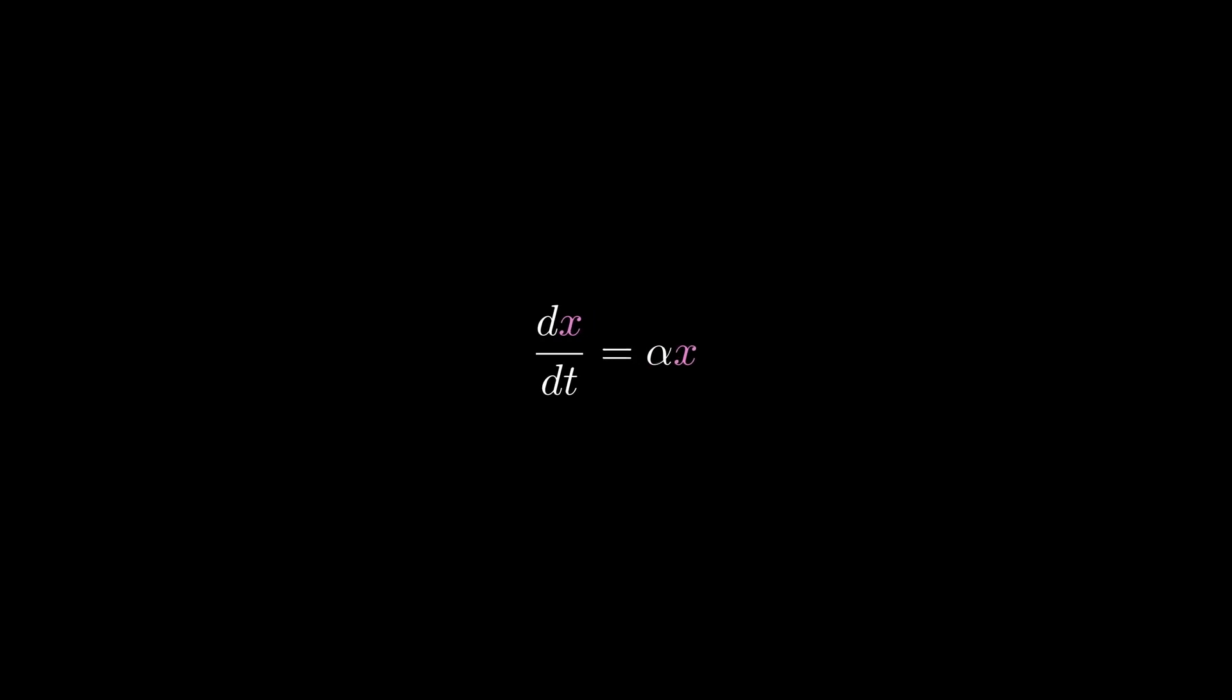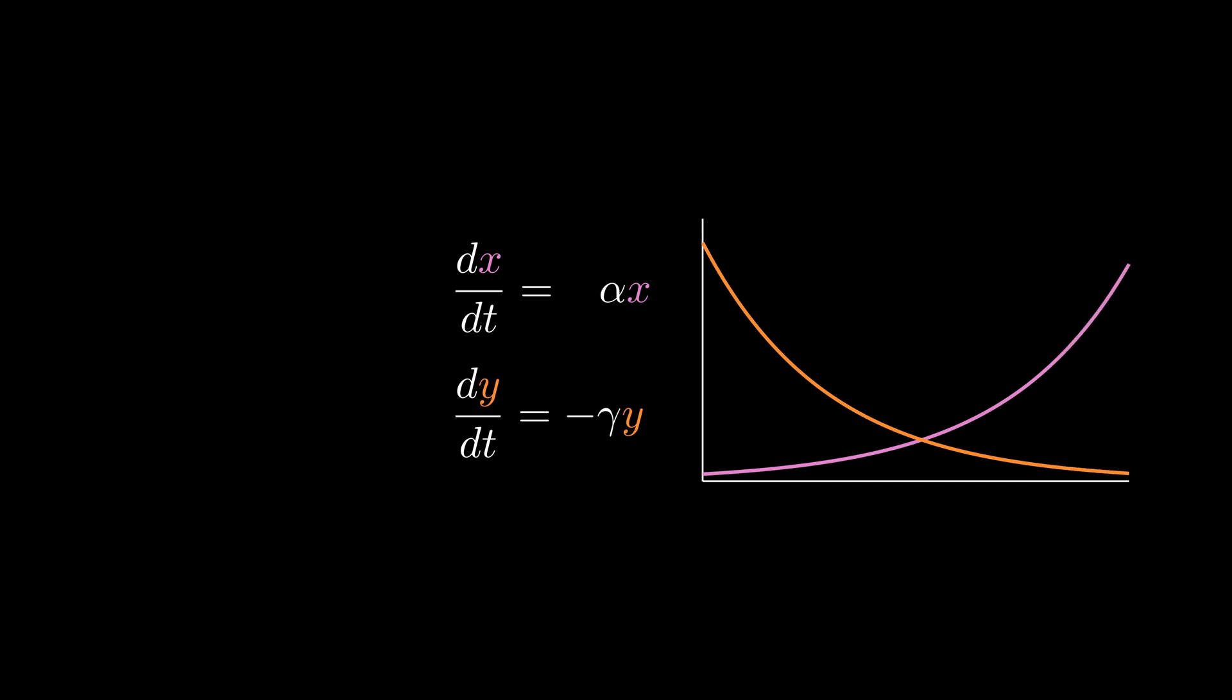On the other hand we have the number of foxes or predators y and of course the more foxes there are the less food each one finds and more starve. So we can also express the rate of change of this population again with a proportionality constant but this time with a minus sign in front to show that the population shrinks when left on its own. If we leave it at that the two populations would not interact, the foxes would just die out naturally and the rabbits would exponentially reproduce.